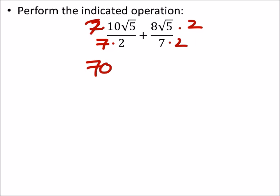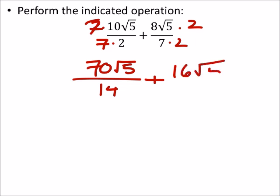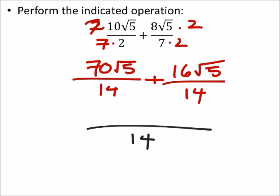So that gives us 70 times the square root of 5 over 14, plus 8 times 2 is 16, times the square root of 5, all over 14. Since we have a common denominator there of 14, we can write this as one fraction.